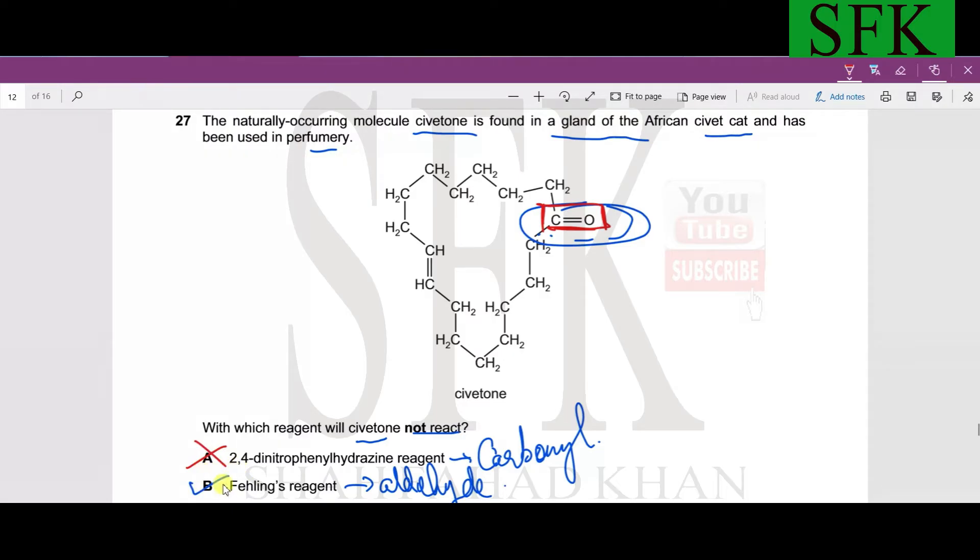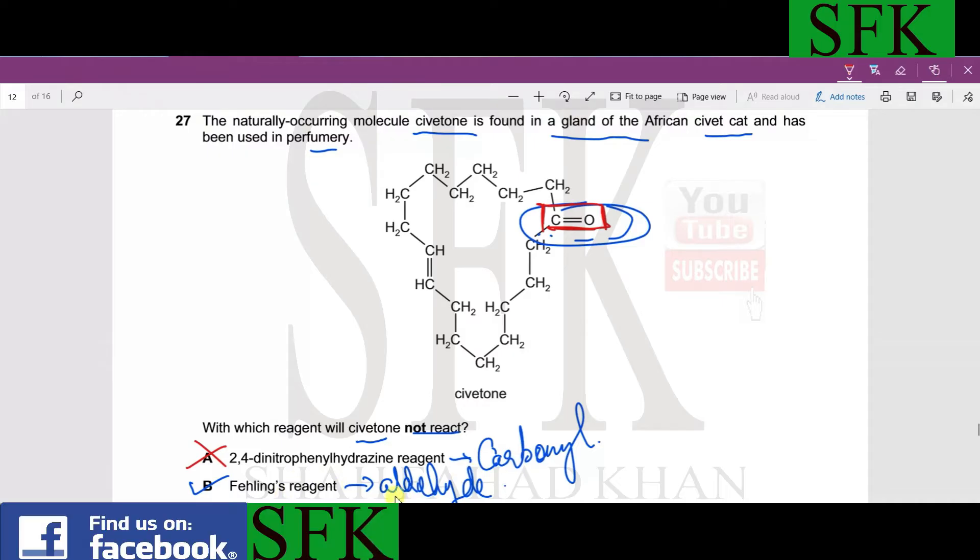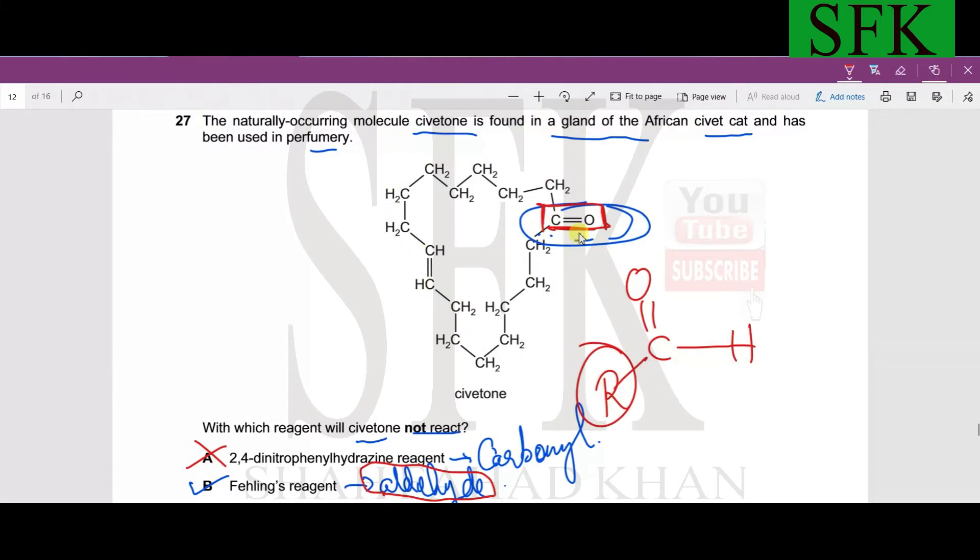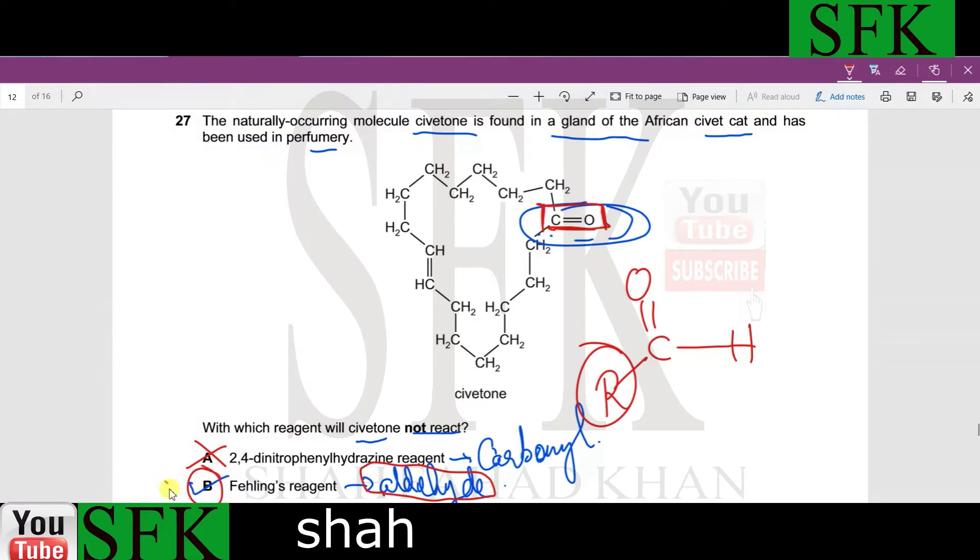What about Fehling's reagent? Fehling's reagent reacts only with aldehyde. Aldehyde groups contain a C double bond O with a hydrogen atom connected to a chain. We don't find any aldehyde group at all, we find only one ketone. So B is the correct option because Fehling's reagent will not react.